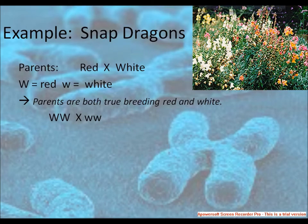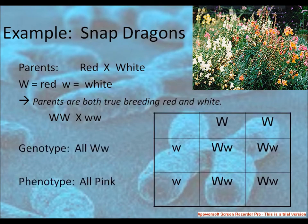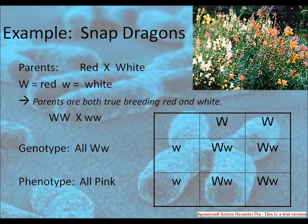Here, the parents are red and white — both true-breeding red and white. Big alphabet W refers to red, and small w is white. When they are crossed, the W and w (red and white) produce, after the F1 generation, all pink flowers. That means the genotype is all big W and small w, and the phenotype all transforms to pink.